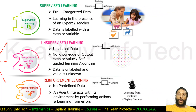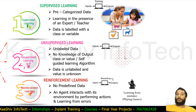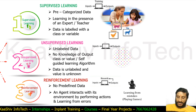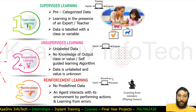In unsupervised learning, the data is unlabeled. We have no knowledge of what the output could be — the value is unknown. It's a self-guided learning algorithm. In reinforcement learning, you learn from mistakes. Once a mistake happens, feedback is automatically given, and based on that feedback, the input is modified. That's how reinforcement learning works.